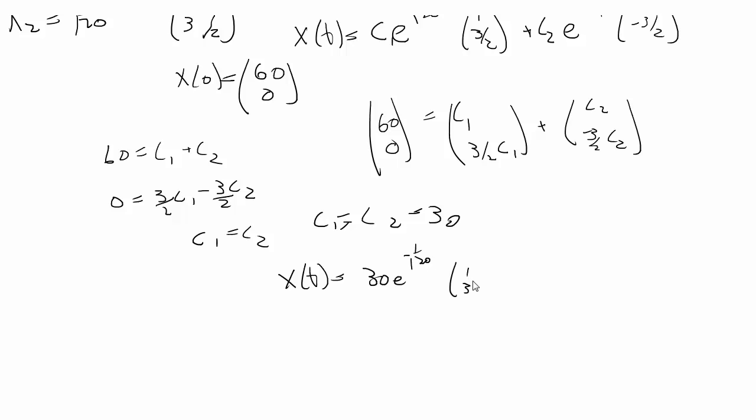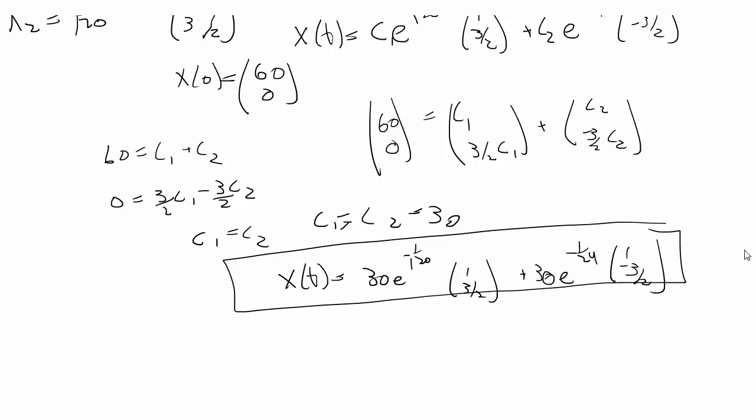So our final solution is x of t is equal to 30e to the negative 1 over 120, 1, 3 halves, plus 30e to the negative 1 over 24, 1, negative 3 halves. And if you can follow along with these two problems,